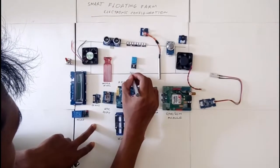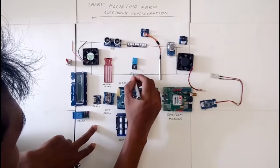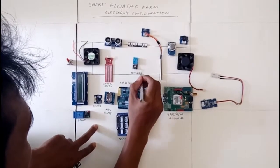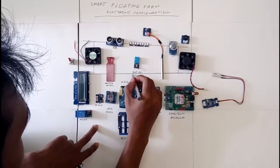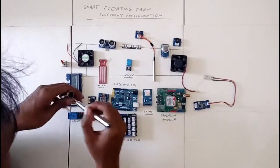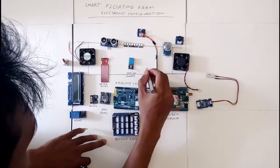We also have DHT 22 to measure humidity and temperature, and then we have the waterproof DS1820 to measure the water temperature.